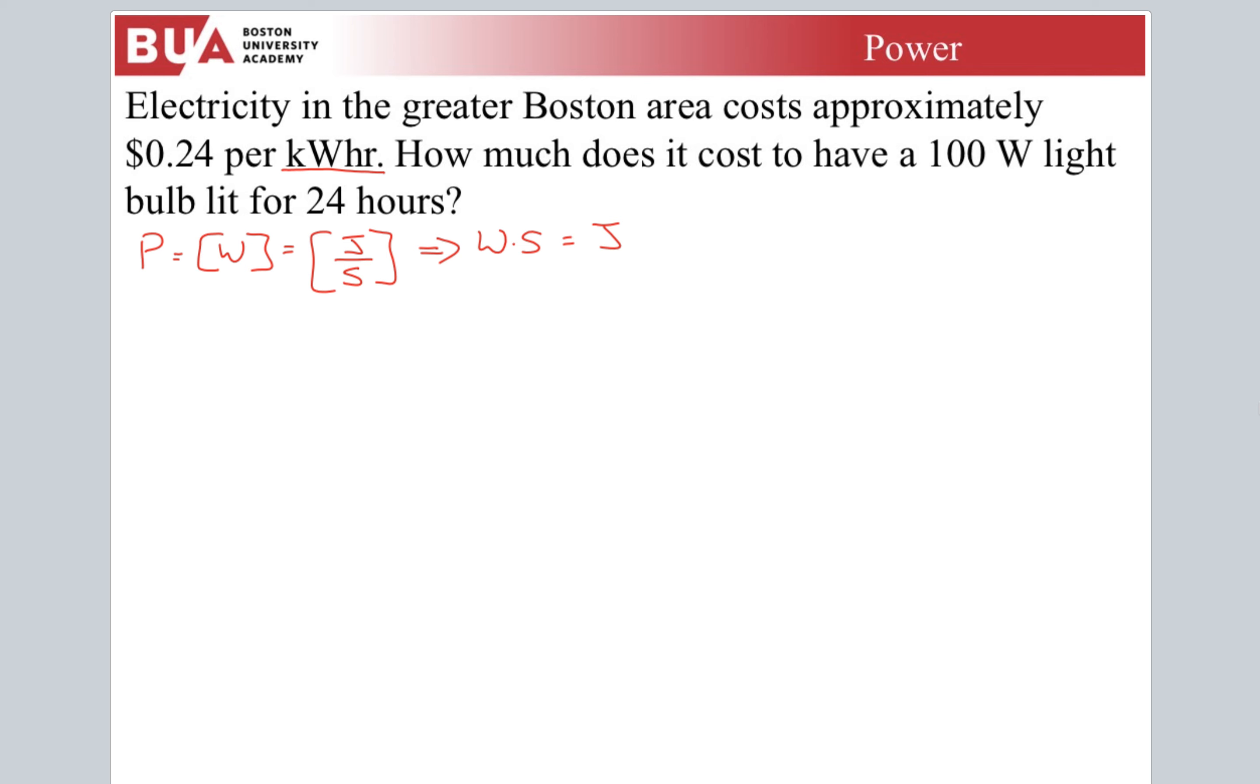It's sold this way because we know our appliances and things like that, we know the power of them. We know their wattage. Think of a light bulb, 100 watt light bulb. We know the power. So this is supposed to be an easier way. I don't know if people actually calculate this at all, but here we go. The question is, how much does it cost to have a hundred watt light bulb lit for 24 hours?